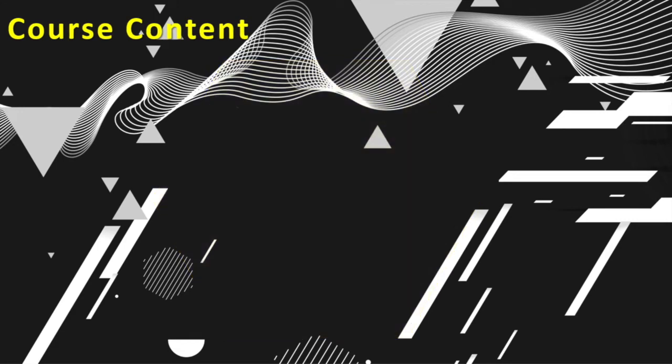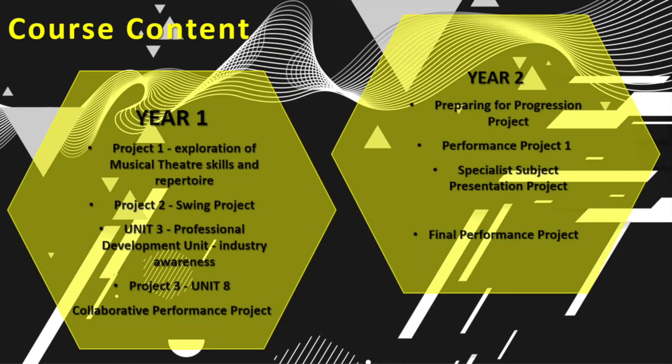In order to complete the qualification successfully, you will need to complete all 12 units across the two years. At the end of Year 1 and Year 2, you will receive a Pass, Merit or Distinction grade. Your course is divided into several projects over the two years.